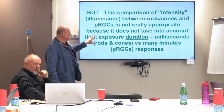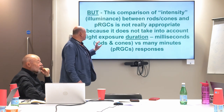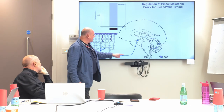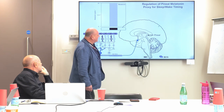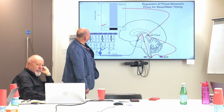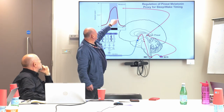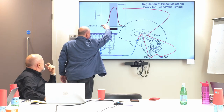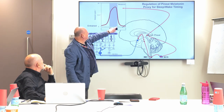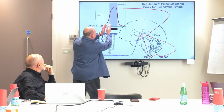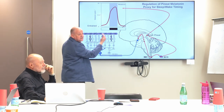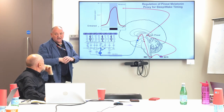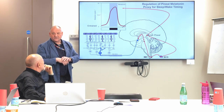Comparing intensity or illuminance between rods, cones, and pRGCs is not really appropriate because it doesn't take into account light exposure duration — milliseconds for rods and cones, but many minutes for the pRGCs. Via the retino-hypothalamic tract to the suprachiasmatic nuclei, there is a rhythm in pineal melatonin that is entrained: melatonin starts to rise approaching dusk and falls as it approaches dawn. As you expand the night length, you can expand the melatonin profile.